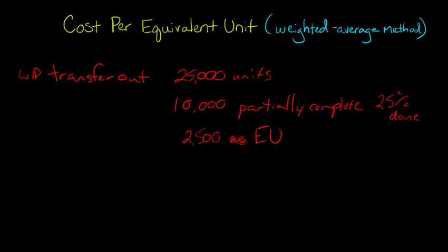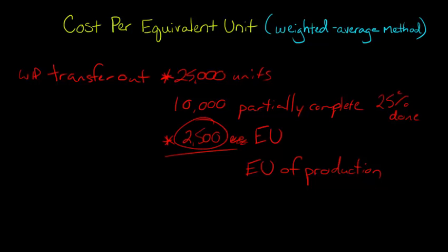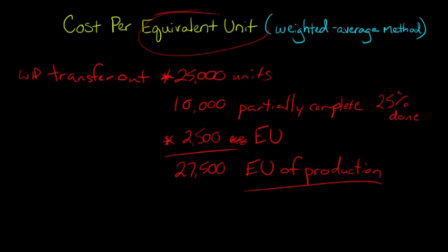So now we can say the total Equivalent Units of Production for that period — the 25,000 that were transferred out, plus the 2,500 that remain at the end — add those two together and that gives us 27,500 Equivalent Units of Production. This is the basic conceptual framework behind what we're talking about with Equivalent Units.